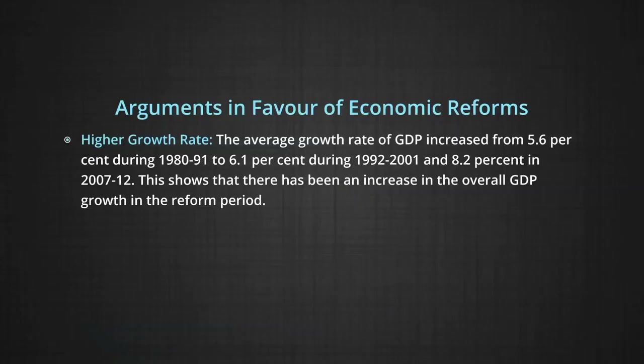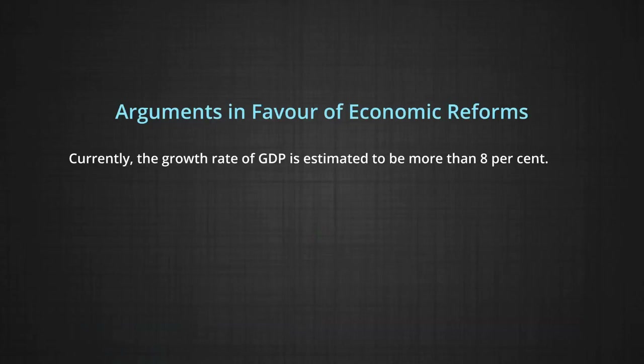Number one: higher growth rate. The average GDP growth rate increased from 5.6 percent during 1980-91 to 6.1 percent during 1992-2001, and 8.2 percent during 2007 to 2012. This shows an increase in overall GDP growth in the reform period. During this period, growth of agriculture and industrial sectors declined, whereas the growth of the service sector went up, indicating that growth is mainly driven by the service sector.